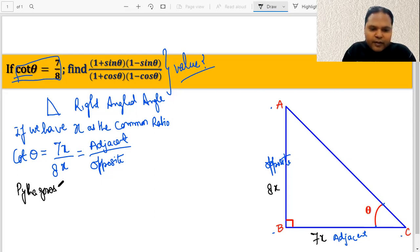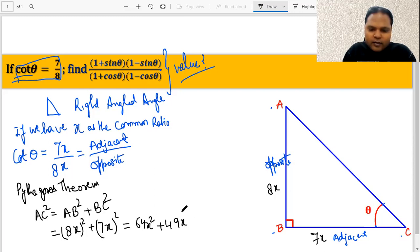When we apply Pythagoras theorem in this particular question, it is going to be AC² = AB² + BC², which basically means AB we already know is 8x, so we put it like this: (8x)² + (7x)².